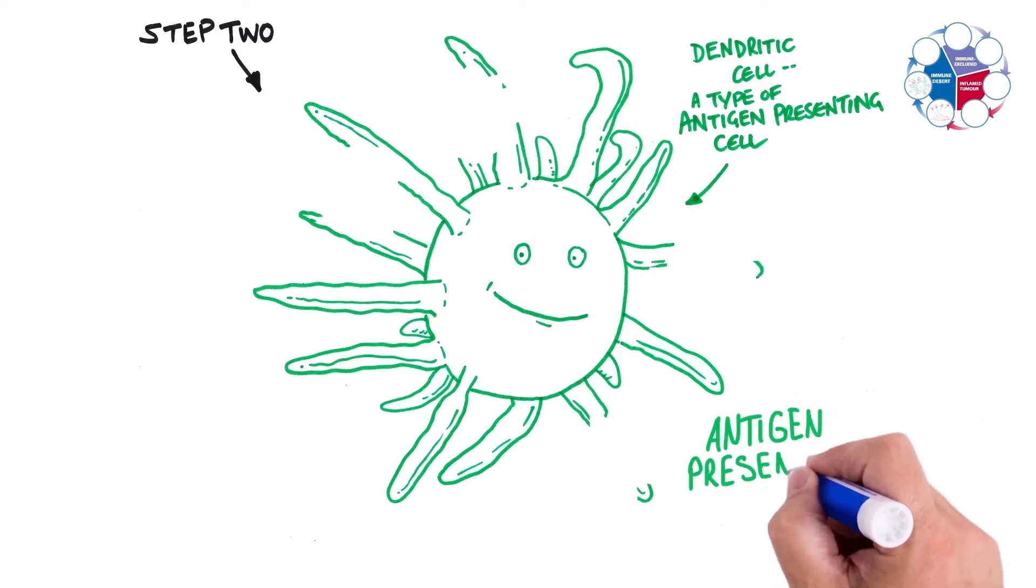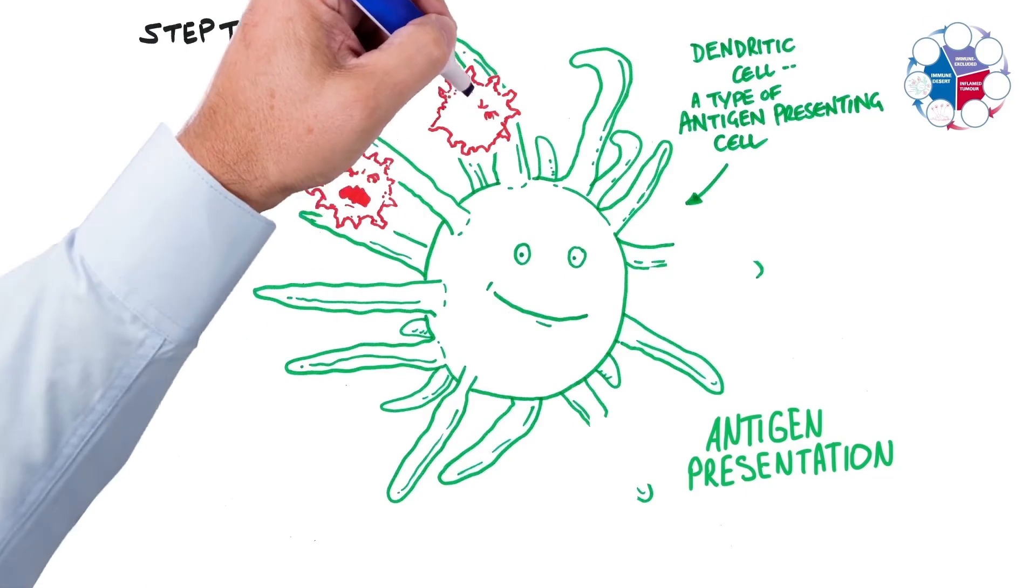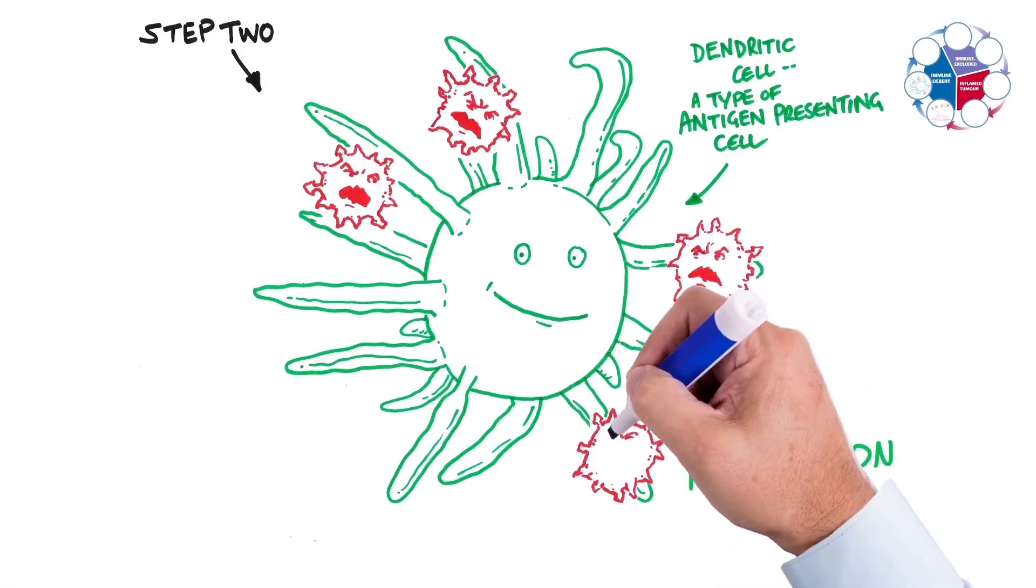Step two, those little protein bits can get picked up by antigen presenting cells, things like dendritic cells that pick them up and then migrate to local draining lymph nodes.